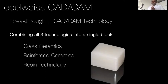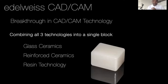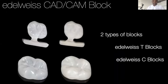That is the glass ceramics, reinforced ceramics, as well as resin technology. So for the first time in CAD CAM technology, we see a single block that contains the properties of all three technologies. The Edelweiss CAD CAM block consists of two types: the Edelweiss T block and the Edelweiss C block.